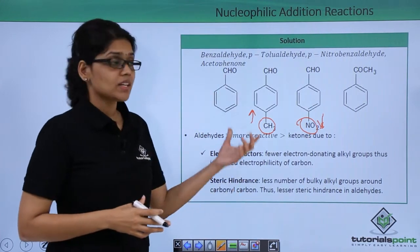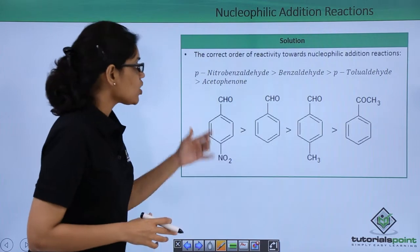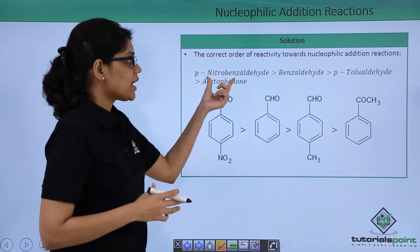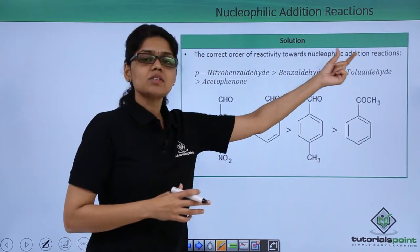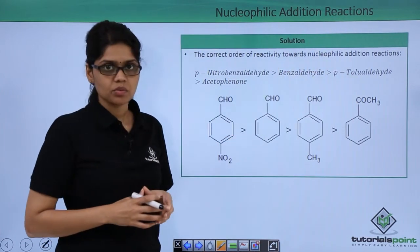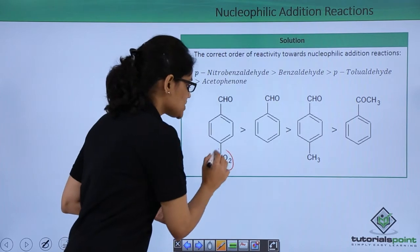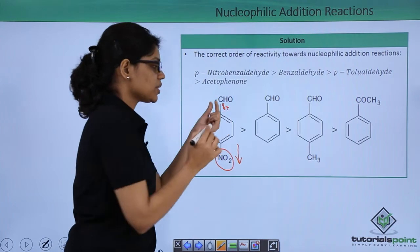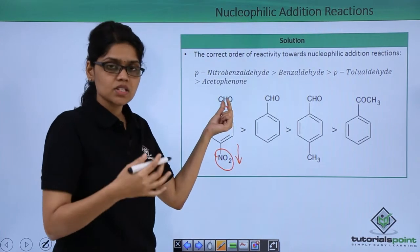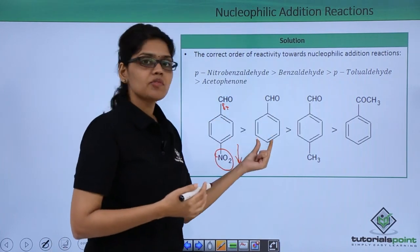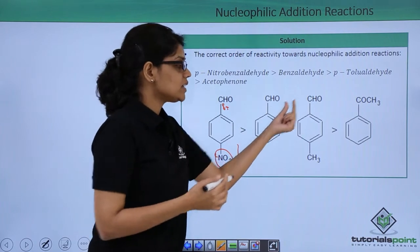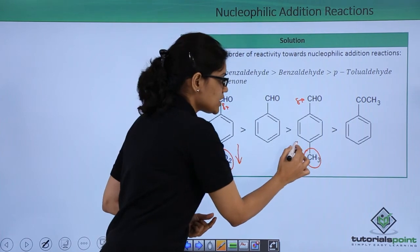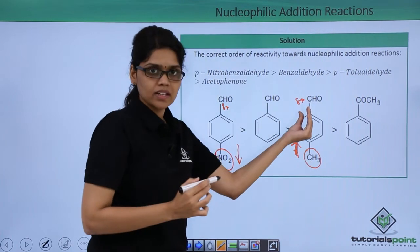Based on these two factors, the correct order of reactivity towards nucleophilic addition reaction is: paranitrobenzaldehyde, benzaldehyde, para-tolualdehyde, and acetophenone. The nitro group is an electron withdrawing group — it increases the electrophilicity of the carbonyl carbon, increasing the delta positive charge.